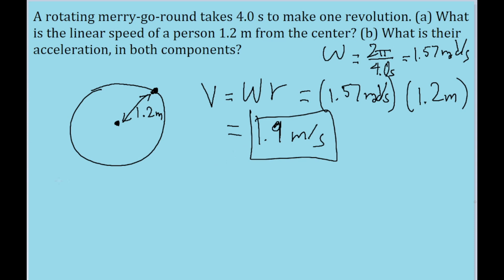Part B then asks for the acceleration in both components. Now, the reason why it specifies both components is because when you have any sort of rotational motion, there are two different types of acceleration you could be dealing with.